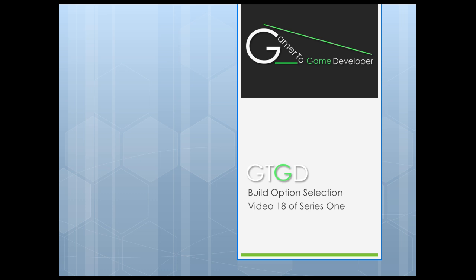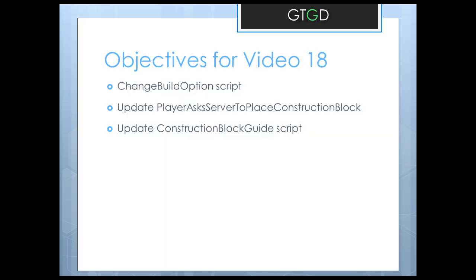Welcome to video 18 of Gamer2Game Developer Series 1. In this video we'll implement build option selection. We've got three simple objectives: discuss the change build option script, update the player ask server to place construction block script and the construction block guide script, then assemble everything and build and run. We won't need to make an icon because we made the construction block icon in the previous video.